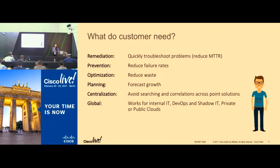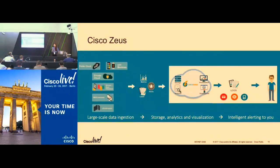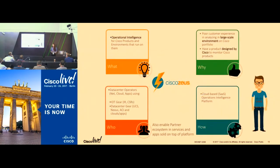In short, Cisco Zeus ingests large-scale data, then helps you store it, visualize it, and monitor it in a better way, sending you alerts right to your mailbox when something bad is happening. Especially if you are already a Cisco customer with a Cisco portfolio, it's even better to use Cisco Zeus to monitor your Cisco products because it's more integrated than outside solutions. Having said that, Cisco Zeus can also monitor your products outside of Cisco — so it monitors everything.